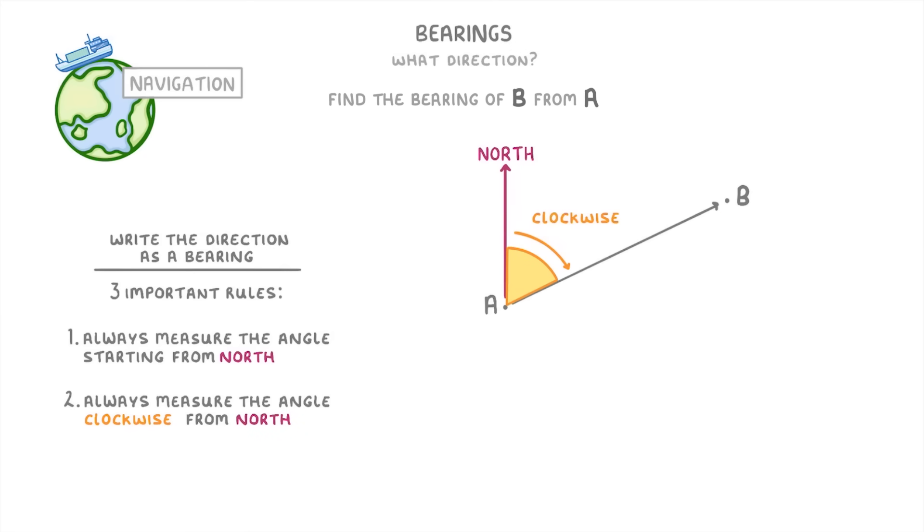So in this case, that's going to be this angle here that we want to measure, and not this angle around here, because this larger angle would be measuring it counterclockwise. And finally, the third rule is that we always write our bearings using three digits. So if you measured this angle with a protractor and got 65 degrees, then to express that as a bearing you'll need to write it as 065 degrees so that it has three digits.